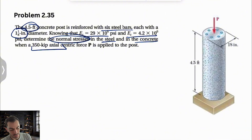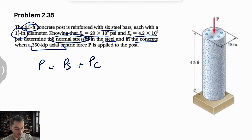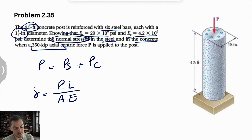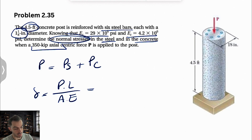The force P applied on top equals the sum of the force in the steel and the force in the concrete. We have the same deformation formula as discussed previously: delta equals force times length divided by area times elastic modulus. The deformation for the steel and concrete is the same since they are the same height — that's the key point in this question.